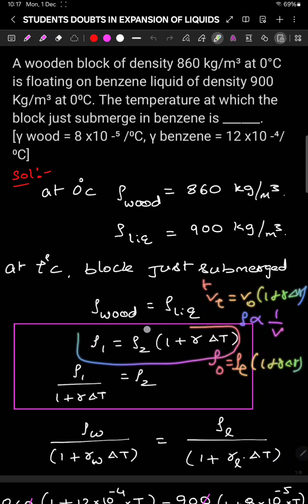That only this formula. So ρ₀ means ρ₁, ρₜ means final density 1 plus gamma delta t. You can write ρ₂ as the subject. So this becomes ρ₁ by 1 plus gamma delta t.